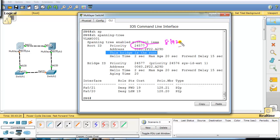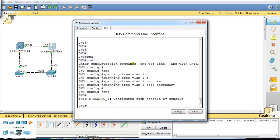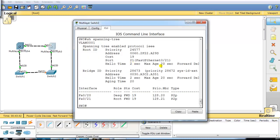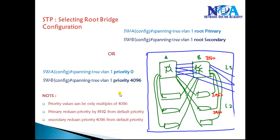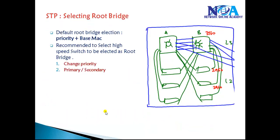Switch 4's priority is reduced to approximately 8192 from the default 32768 when using the `root primary` option. On switch 3, verifying with `show spanning tree` shows the priority reduced to 28673, which is 32768 minus 4096 — the result of using `root secondary`. Either method can be used to manually select the root bridge depending on your requirement. It is always recommended to have your high-speed switch as the root bridge, so all traffic is forwarded through it rather than through any low-end switch.